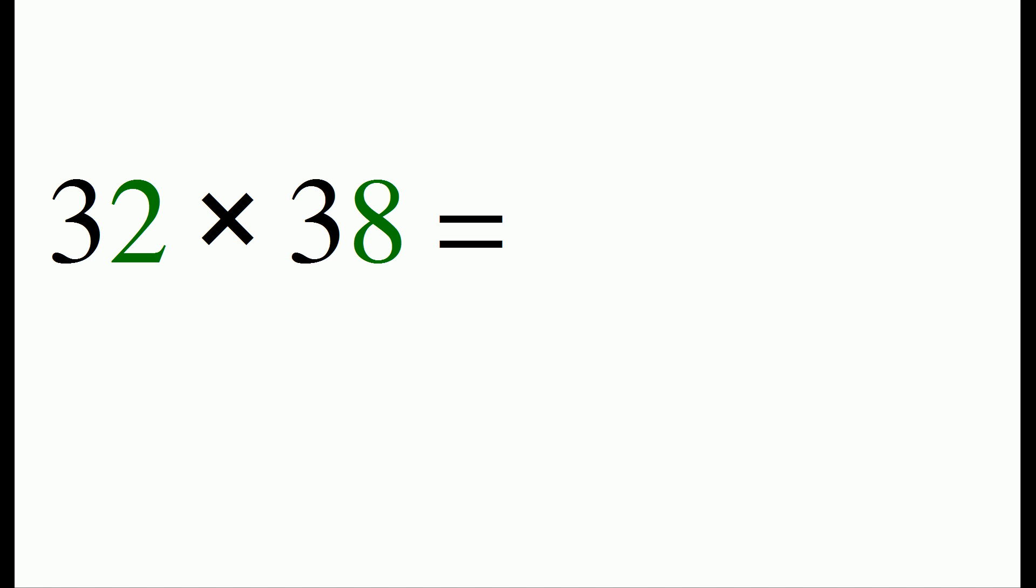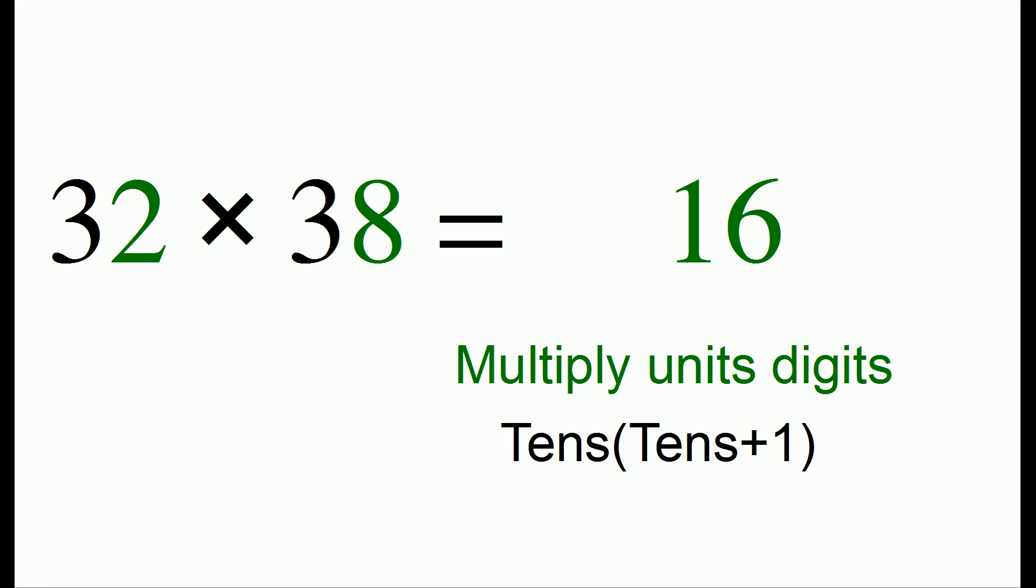To do another example 32 times 38. We multiply the units digits together. 2 times 8 is 16. Then we take the tens digit of 3 and multiply it by one more than itself 4 to get 12. So 32 times 38 is 1216.